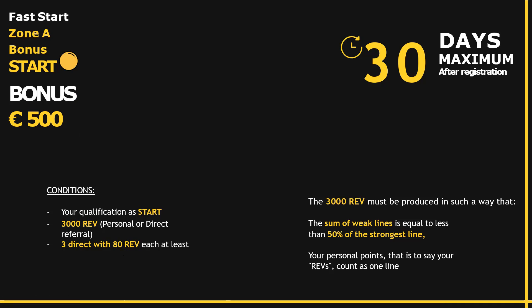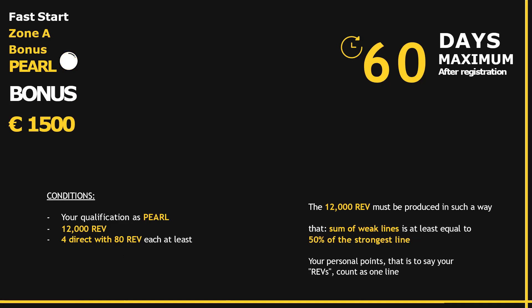If within the first 60 days you manage to reach the pearl level and get a total of 12,000 REV and four direct downlines with 80 REV minimum, you will get 1,500 euros. It is important to understand this rule: the sum of your weak lines has to be at least equal to 50% of the strongest line.